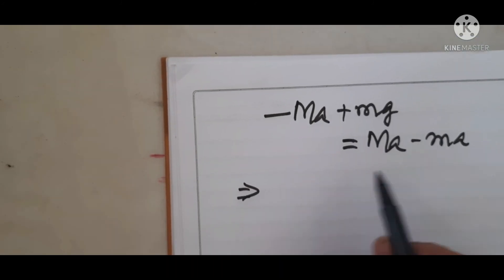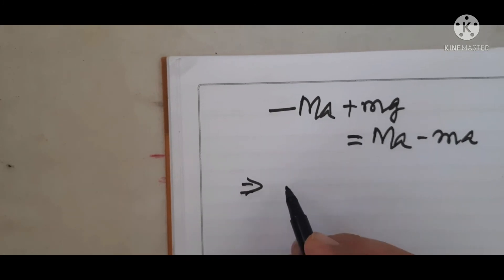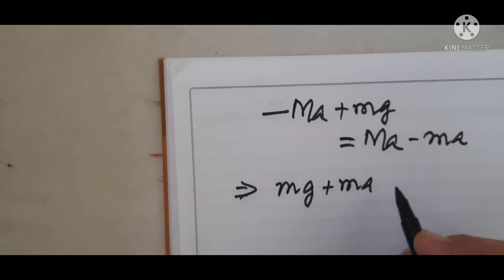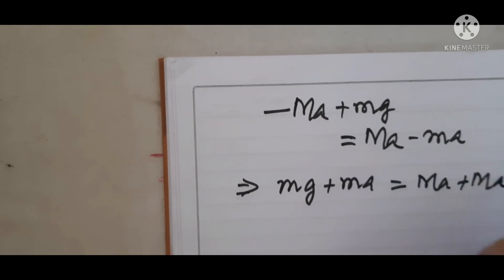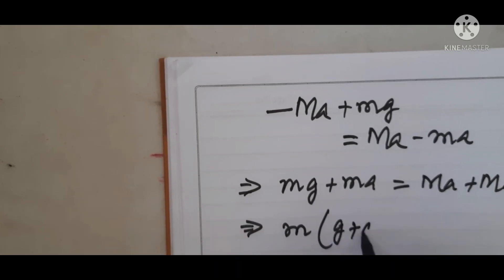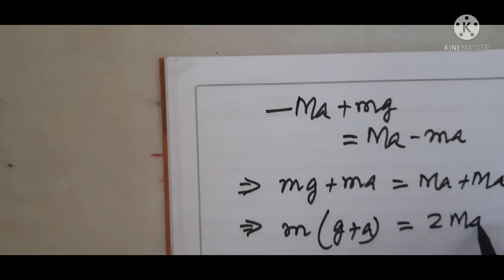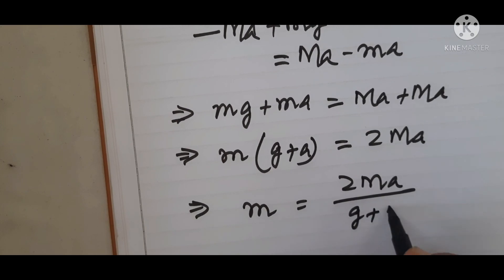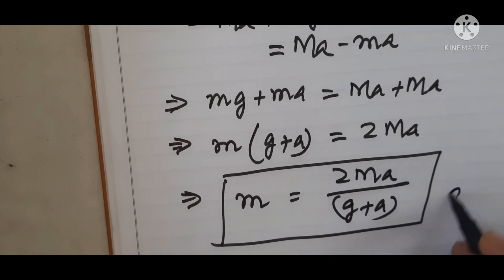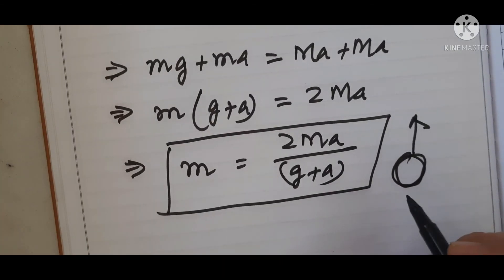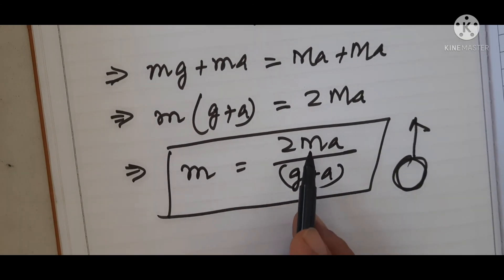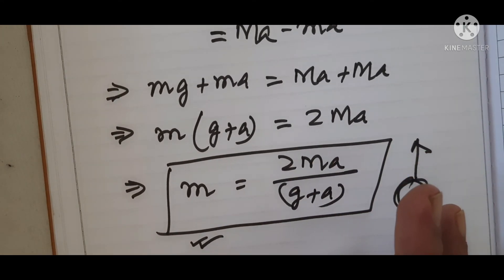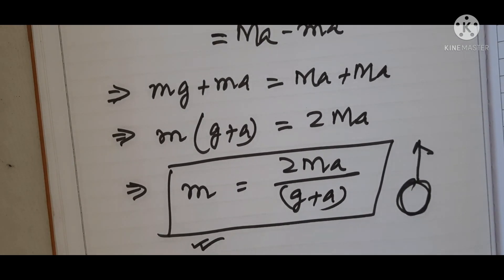Taking m common: m(g plus A) equals 2MA, therefore m equals 2MA divided by (g plus A). This is the mass that must be removed from the balloon so that it starts moving upward with acceleration A. If you know capital M, small a, and g, you can easily find out how much mass must be removed from the balloon so that it starts moving upward.